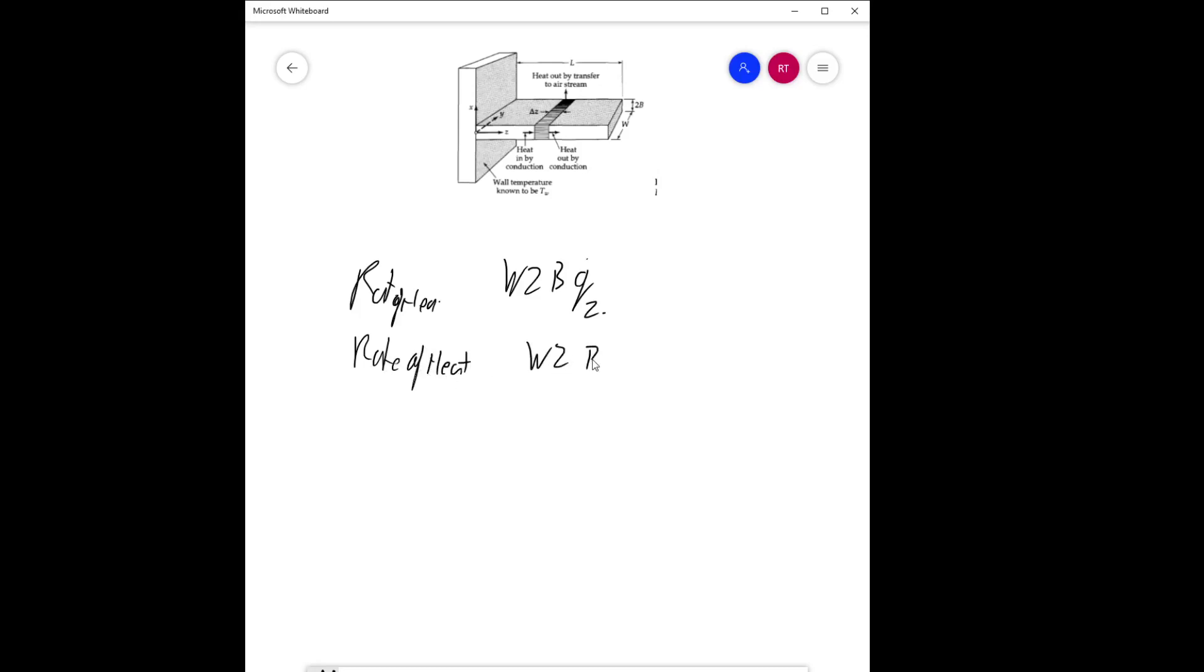That will be Q(z + delta z). There is a negative term, which is H times the loss of heat going through from the top and bottom surfaces. We'll take this as W delta Z times 2.